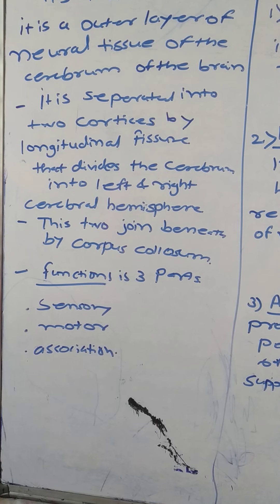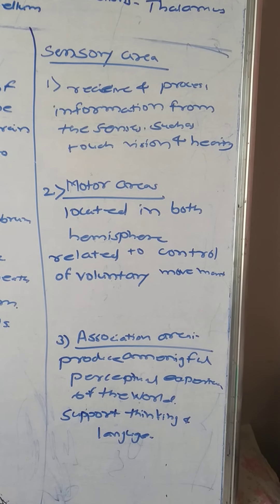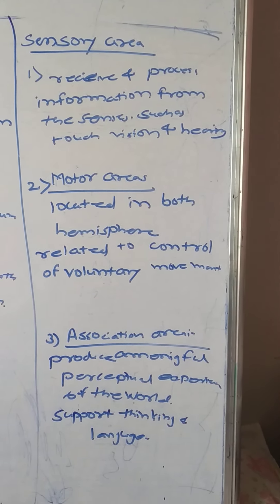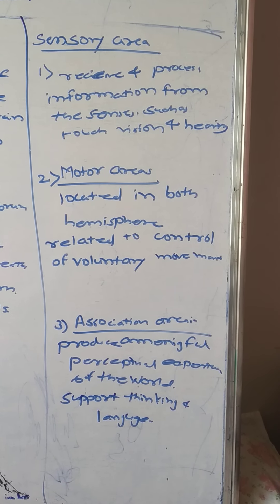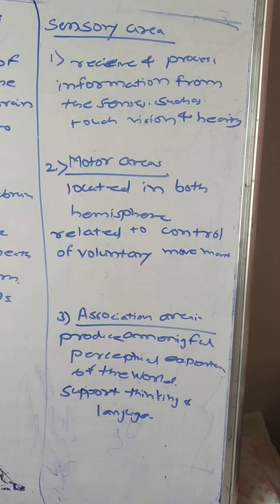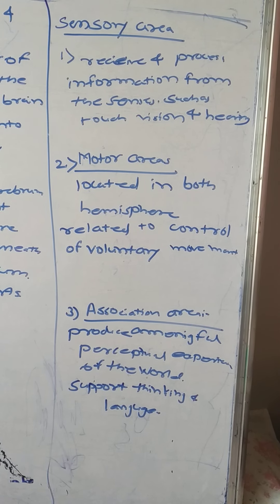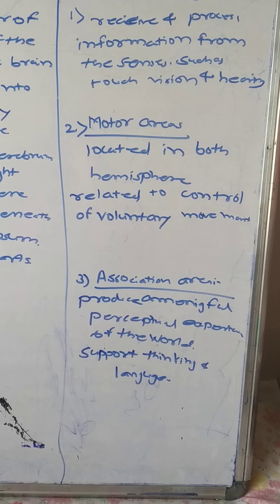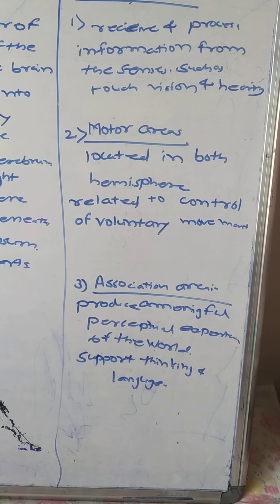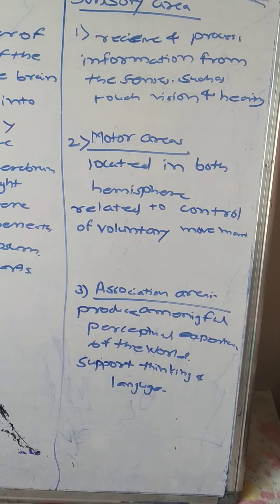The function of the cerebral cortex is divided into three parts: sensory, motor, and association. The sensory area receives and processes information from the senses such as touch, vision, and hearing. The motor areas, located in both hemispheres, are related to control of all voluntary movements. The association area produces meaningful perceptual experience of the world and supports thinking and language — allowing us to convert what we think into language.